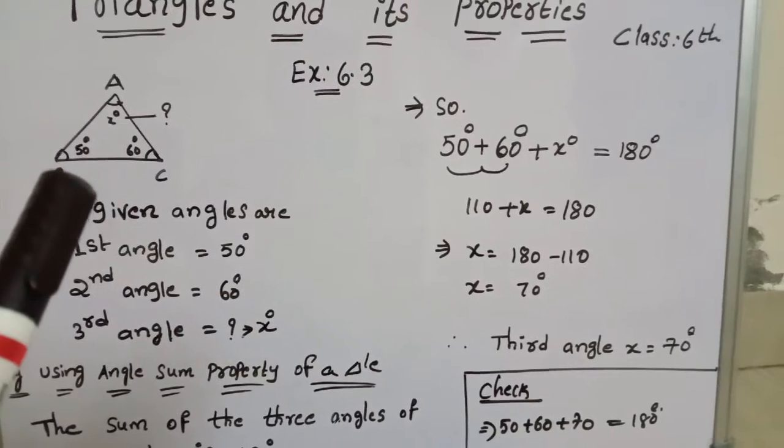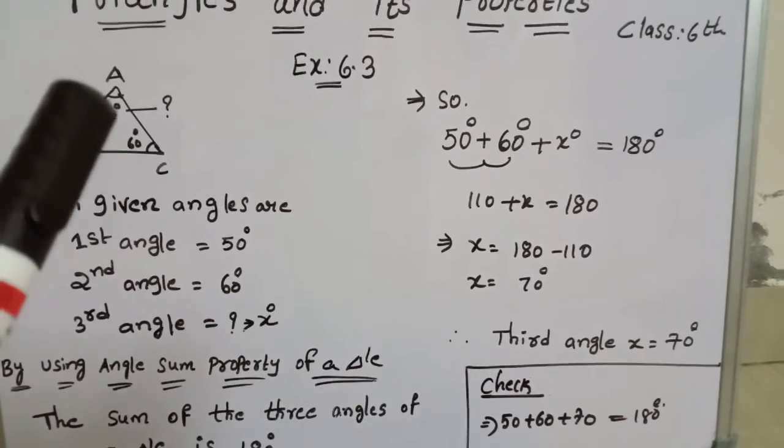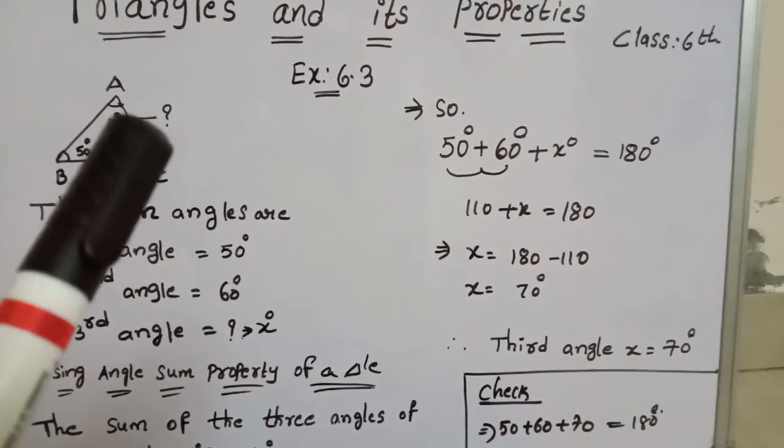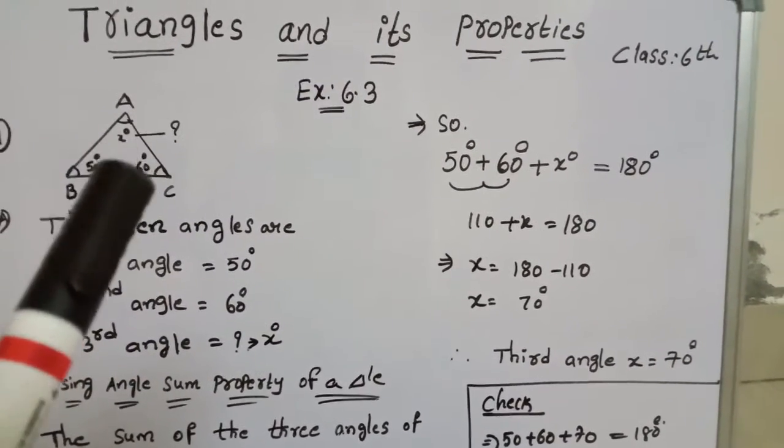Here we have the 3 angles are 50 degrees, 60 degrees and X degrees. X is an unknown value or missing value. So how to find this unknown value?